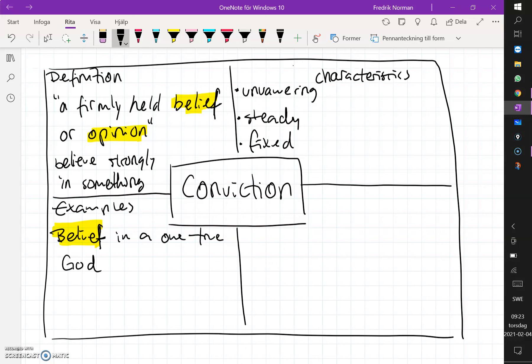Next, I could have someone who has an unwavering opinion that eating meat is wrong. Those are two examples we could have of conviction. Yet, once again, I'm using the same words we see from the definition, but I also used one of the characteristics here.